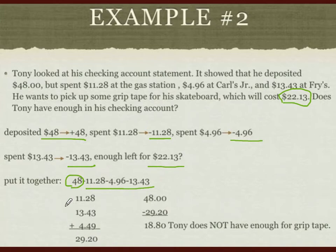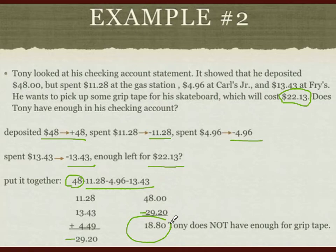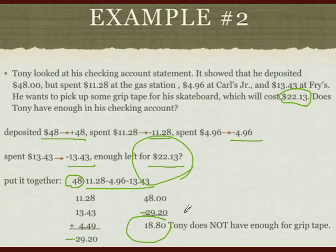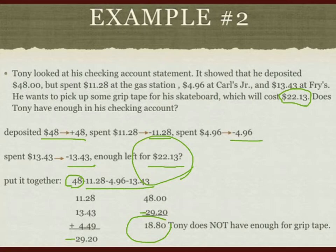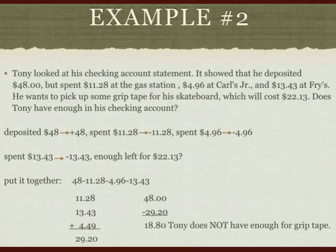Since these are all negative numbers, the total is also negative. We subtract that from the positive $48, which gives us $18.80. Tony does not have enough for the grip tape because the grip tape costs $22.13. Therefore, he doesn't have enough money to buy it. Does it make sense? Yes — he has spent three times already with only $48. Considering $22 for the grip tape plus what he already spent, he doesn't have enough. I am convinced my answer is correct.